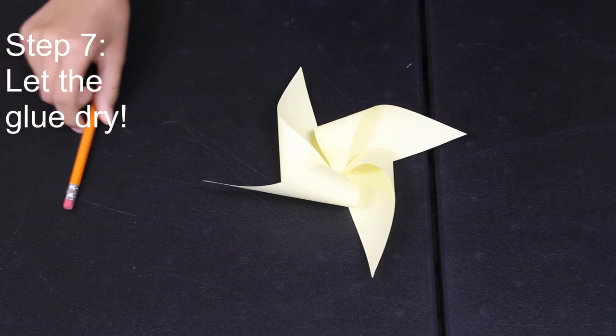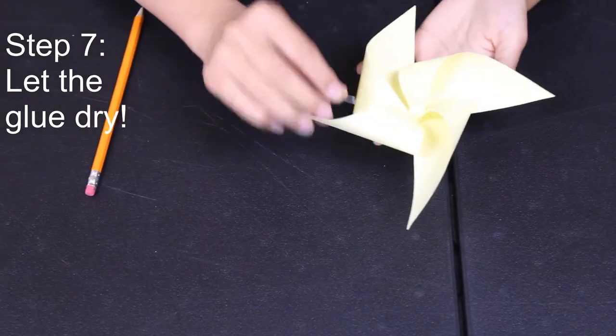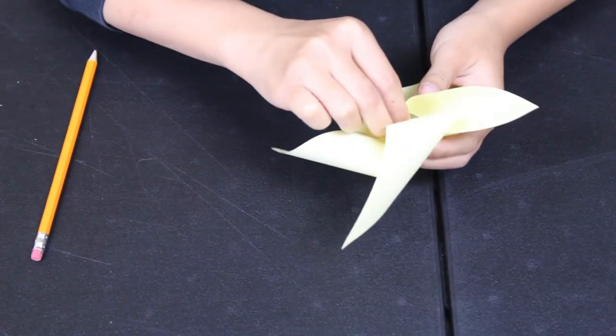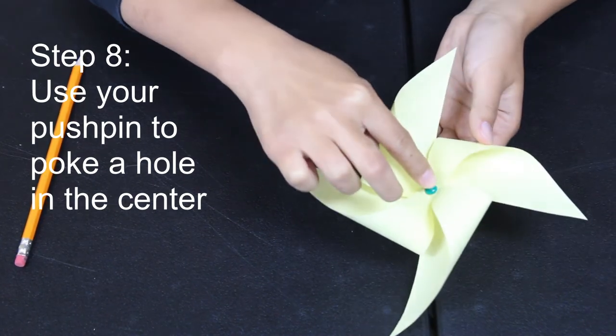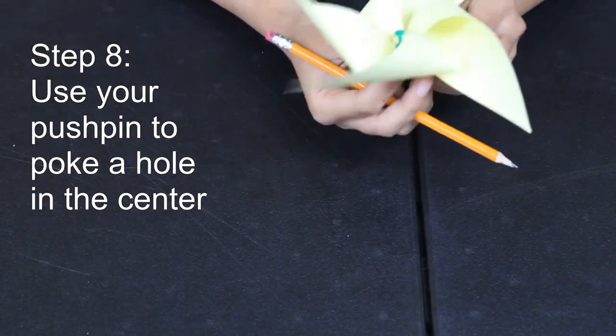Once the glue dries we're going to find the center of that pinwheel and take our push pin and poke a hole through the center of the paper. If you're holding it like this be careful not to poke your fingers. If you need to you can ask a trusted adult to help you with this.